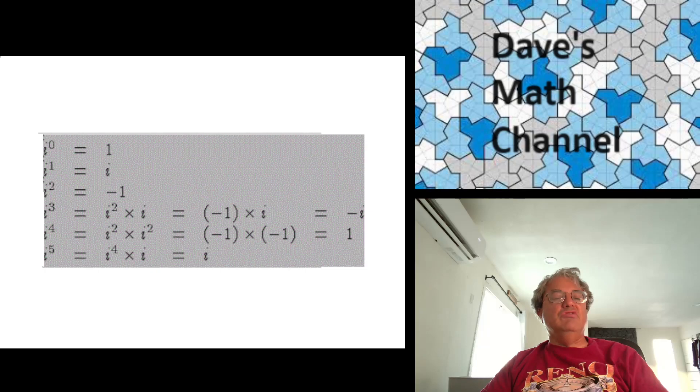So you can calculate powers of i. Here's a table of the first few powers of i. These are easy to calculate. i to the zeroth is 1, because any number to the zeroth power is 1. i to the first power is i, because any number to the first power is equal to itself. i squared, we already defined to be minus 1. i cubed, we can calculate that as i squared times i. But we know that i squared is negative 1, so we have negative 1 times i, which is negative i. i to the fourth, we can calculate as i squared times i squared, which is negative 1 times negative 1, which is equal to 1.